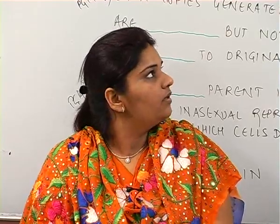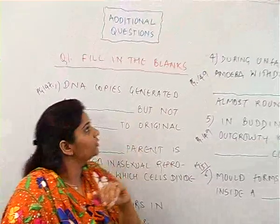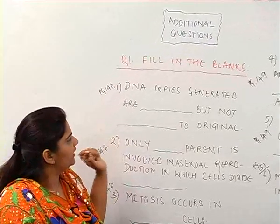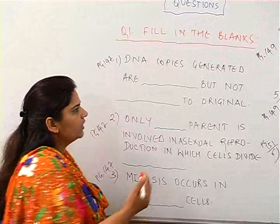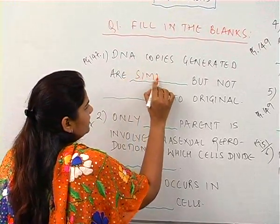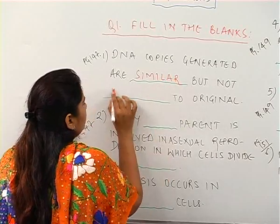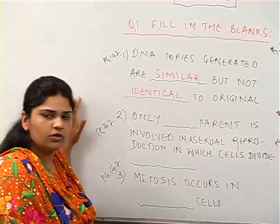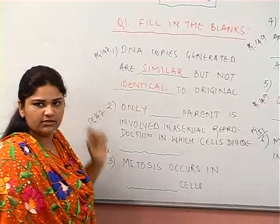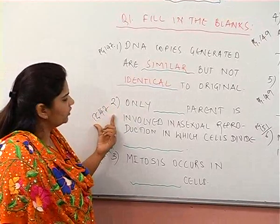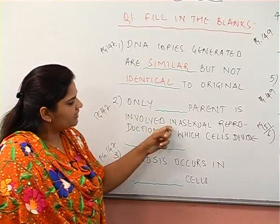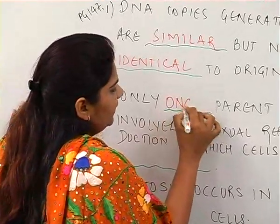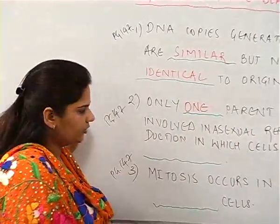Chapter 12: The Life Cycle. The first fill-in-the-blank question is from page 147 of your textbook. DNA copies generated are similar but not identical to the original. The second question is also from page 147: only one parent is involved in asexual reproduction in which cells divide mitotically.